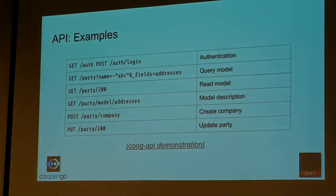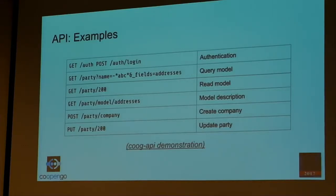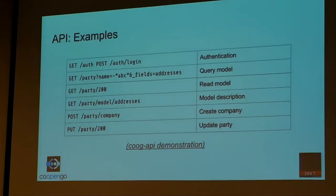Some examples of API usage: authentication to query a model, to read a model. We also have an extra endpoint to make introspection on a model — when we do a GET on the party model, we get the full list of fields of party. When I want to zoom in on a particular field I can, for addresses for example. The main reason we made this was that for select values, we don't need to hardcode from the website the same values that exist on Triton — we just ask Triton to give us that information.